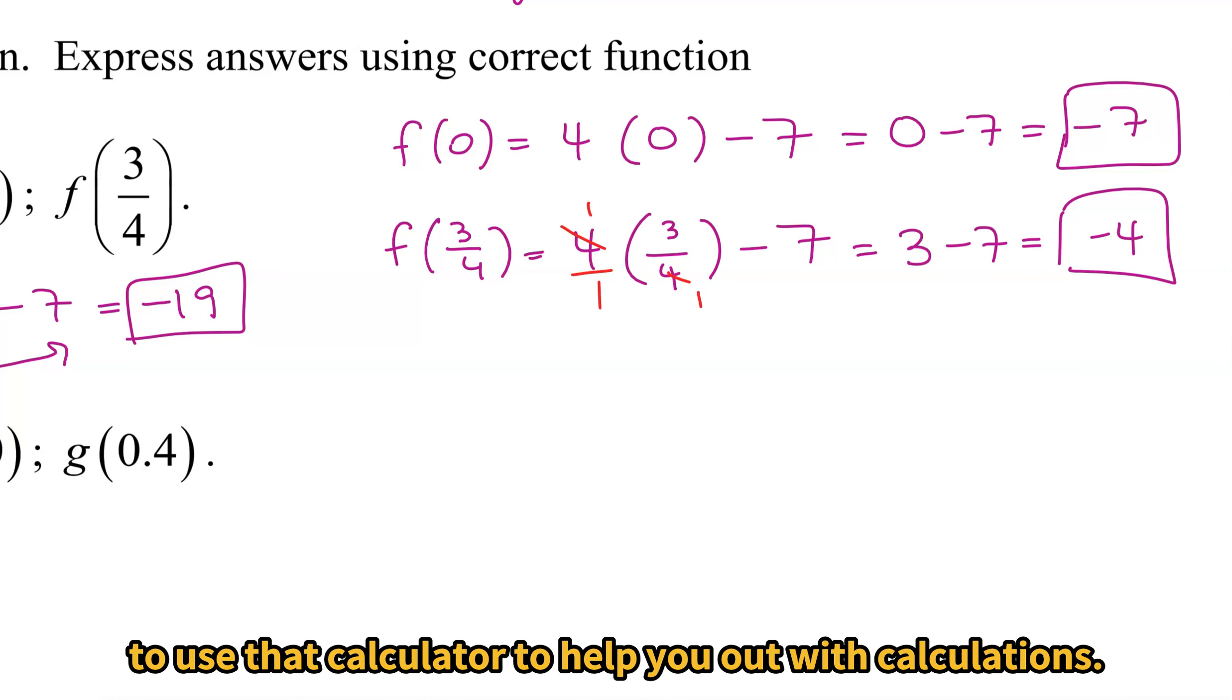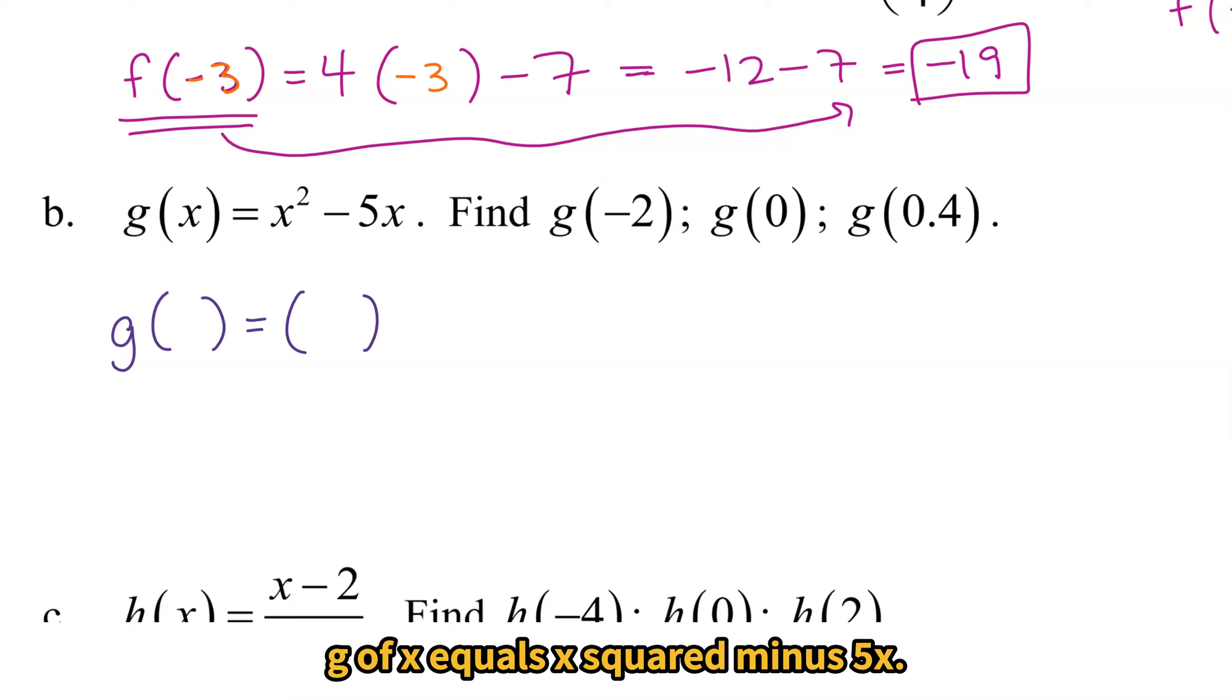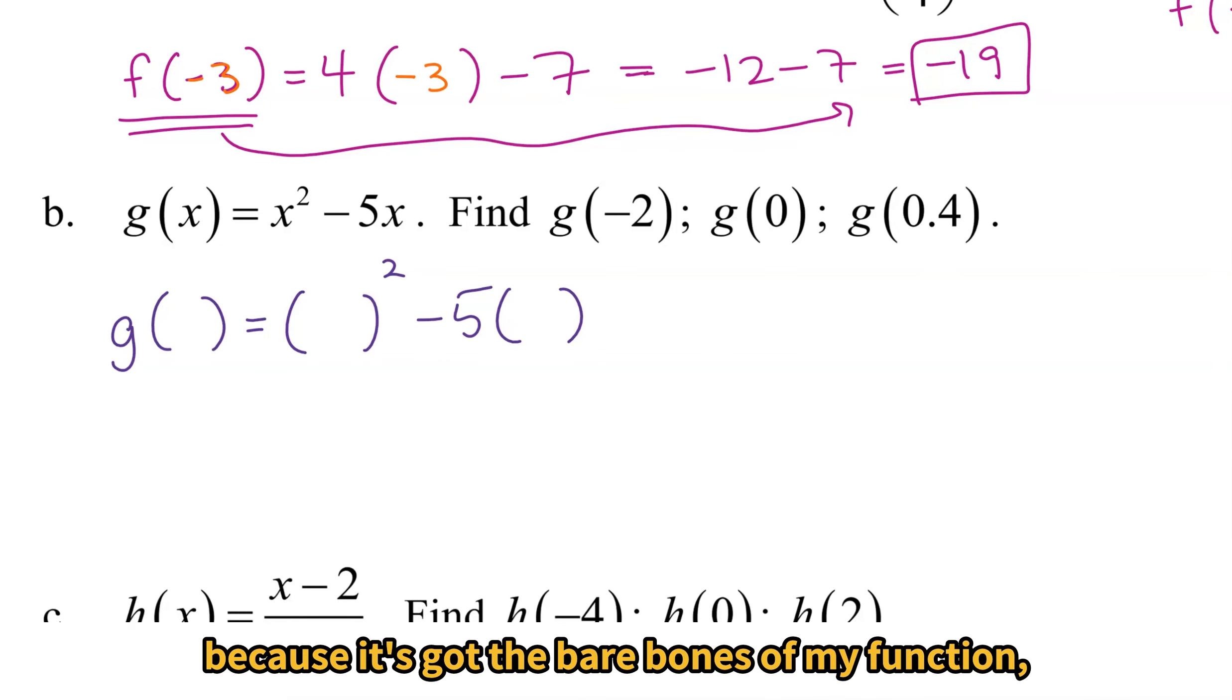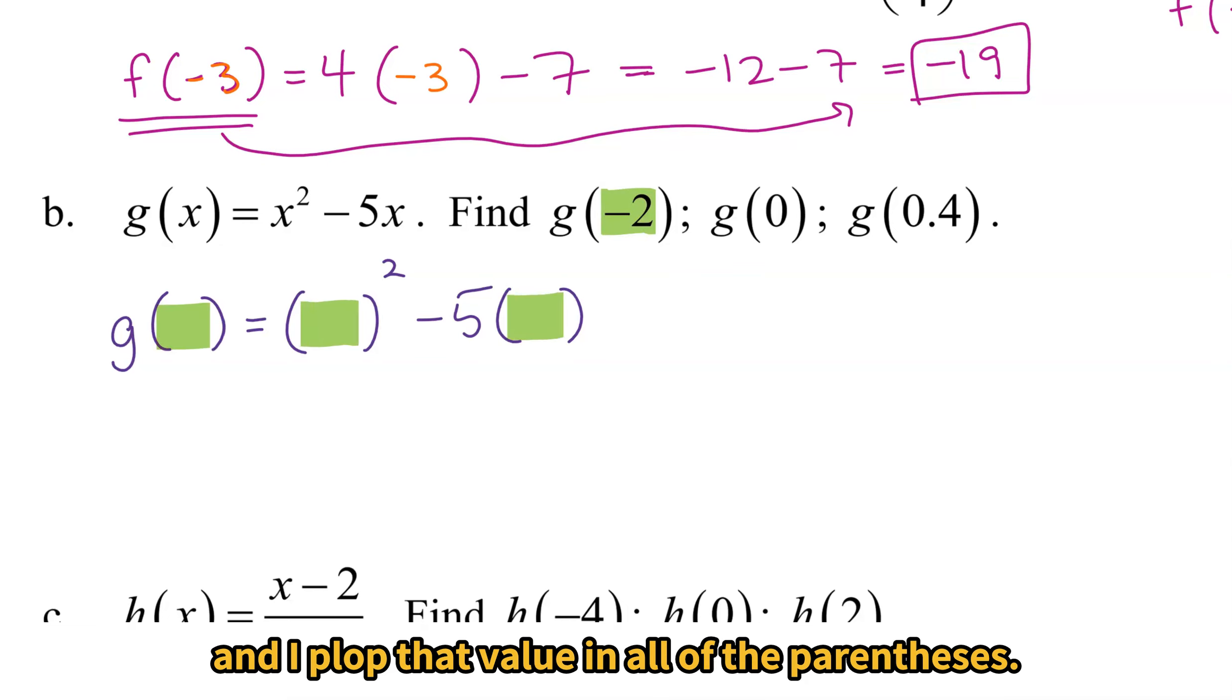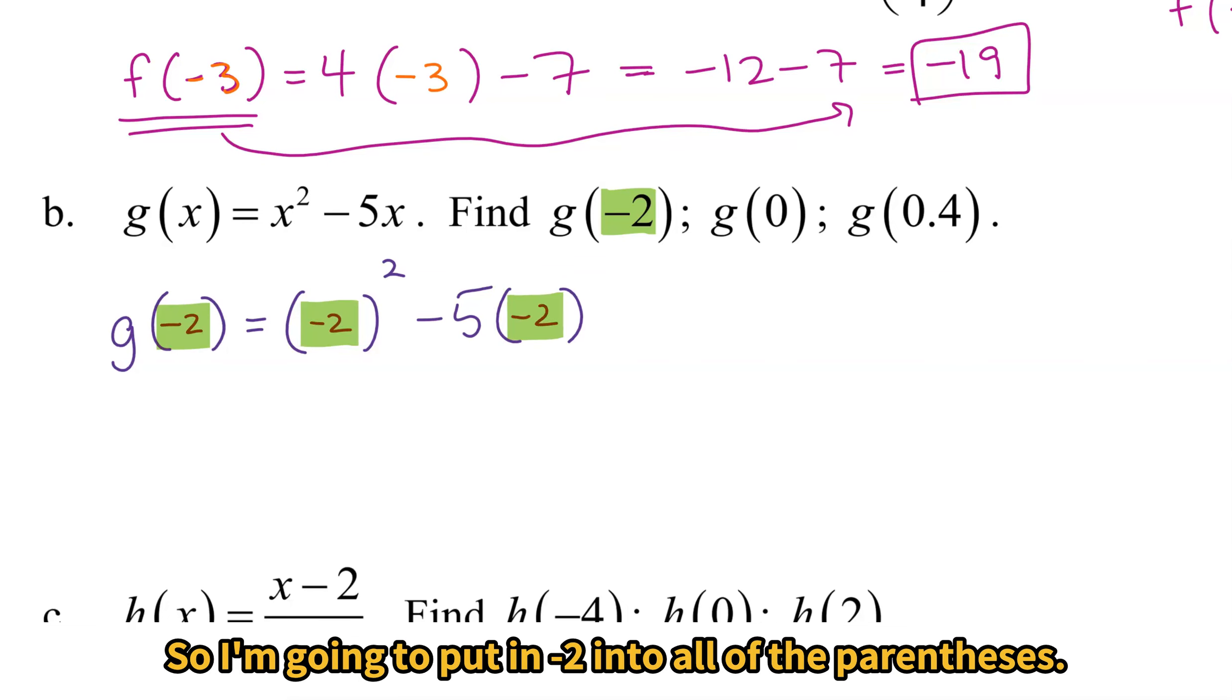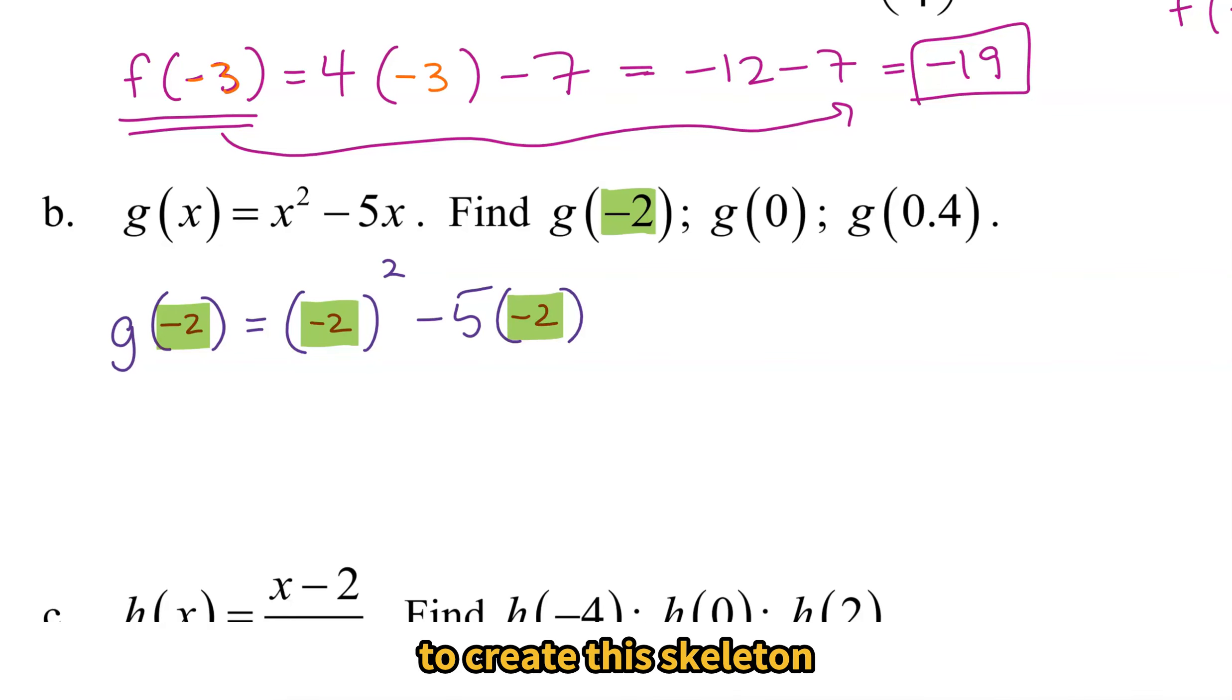It's perfectly fine to use that calculator to help you out with the calculations. Taking a look at part B with g(x) = x² - 5x. I'll start out with my skeleton g(x) = x² - 5x. I call this a skeleton because it's got the bare bones of my function. And I can take the value that I'm evaluating and I plop that value in all of the parentheses.